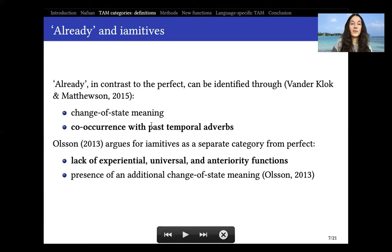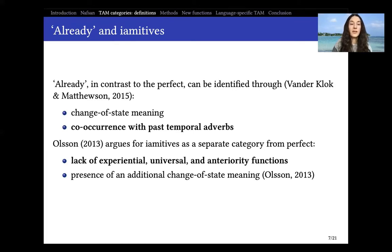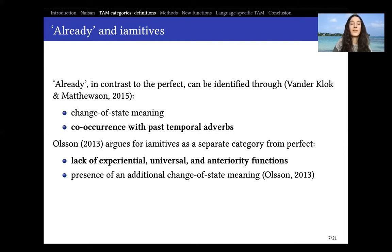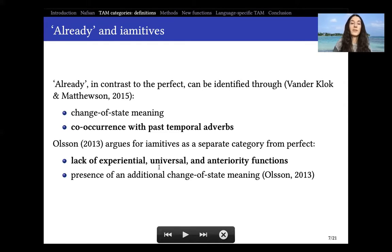Yamitives are a second category, proposed by Olson in 2013 as a separate category from perfect but nevertheless similar in some aspects. This category would not have the experiential, universal, and anteriority functions. What Olson also proposes is that a yamitive would be a sort of present perfect — it would also not have anteriority functions like past perfect — but it would additionally have a change-of-state meaning similar to 'already.' So it would be a category in between 'already' and perfect.